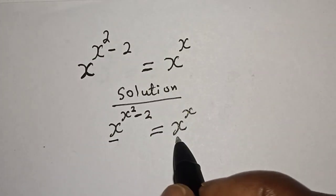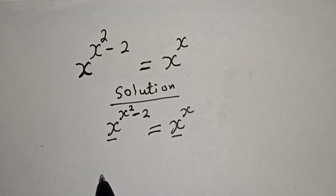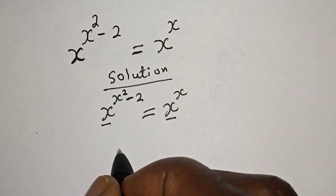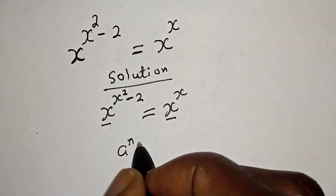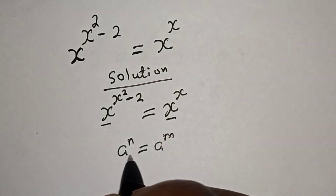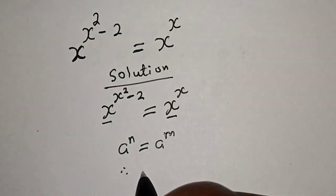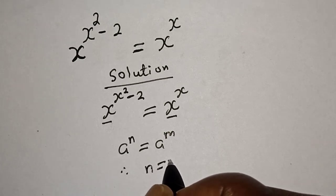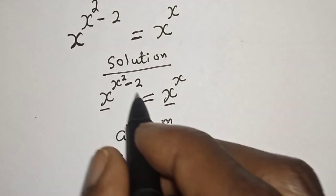We can see that the bases are equal, so we work with the exponents. If you have a raised to power n is equal to a raised to power m, then therefore n is equal to m.